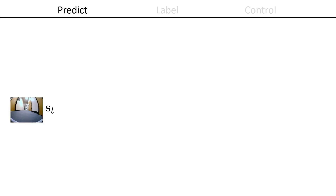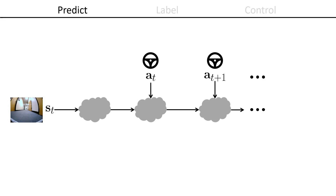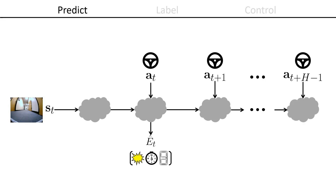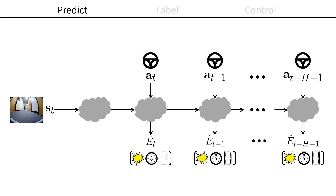CAPS has three distinct phases: predict, label, and control. At the core of CAPS is a learned predictive model. The predictive model takes as input the current state, such as the onboard camera image, and a sequence of h future actions, such as steering angles, to produce h latent states. From each of these latent states, the model predicts the future values of the event cues, which might include whether the robot will collide, what its heading is, and whether it sees a door.